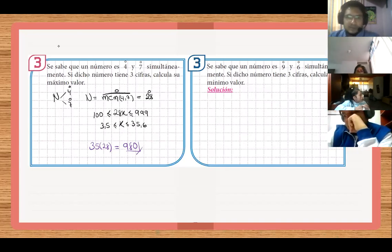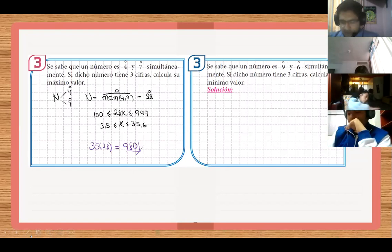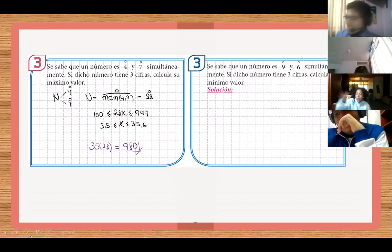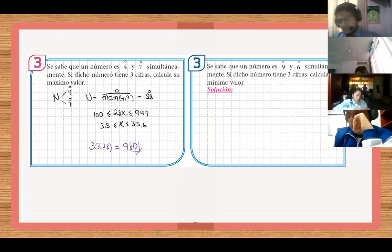Entonces ustedes pueden hacer el 3 espejo. Les doy un minutito. 9,90. No, 9,80. No, el otro me refiero, el 3 espejo. Pero te piden el mínimo. Lee la pregunta, pues. Ay, 108. Claro, ya está. 108. Número mínimo? 18 por 6. 108.